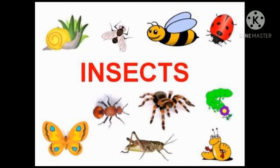An insect is a very small or tiny animal that does not have bones, but they have an outer covering shell which protects them. Most of the insects consist of six legs. Insects live in forests, trees, grass. There are many friends who live in the forest, on trees, or plants. Let's learn about them.